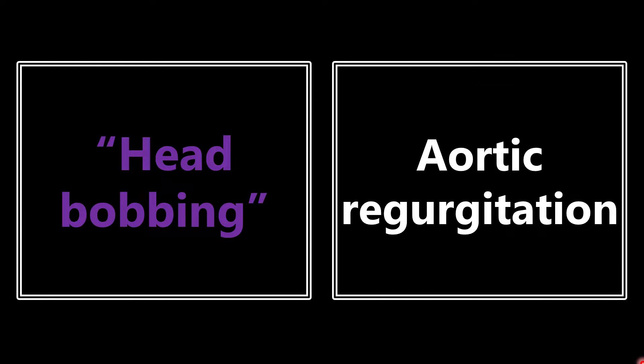The next one is head bobbing. If you see that, think aortic regurgitation. On the boards, they may not say 'head bobbing' directly — they may say someone's head is moving up and down, or undulating, some weird description like that. But if they're describing that, they want you to think about a cardiac murmur, specifically aortic regurgitation.